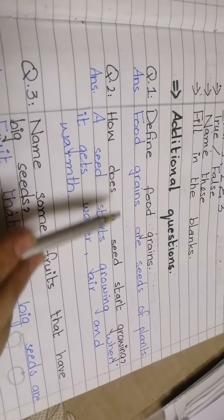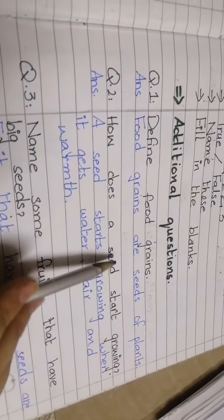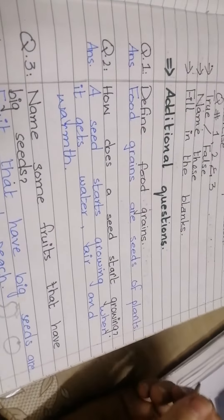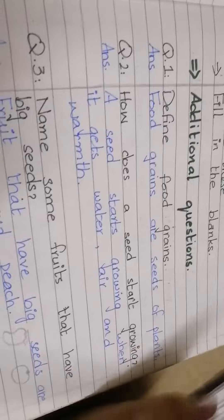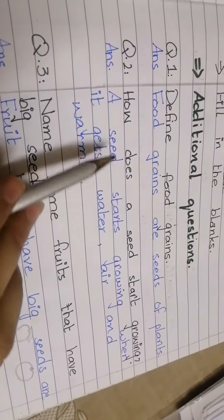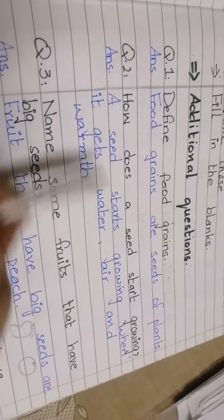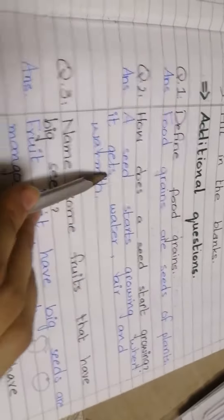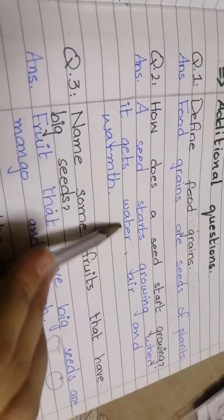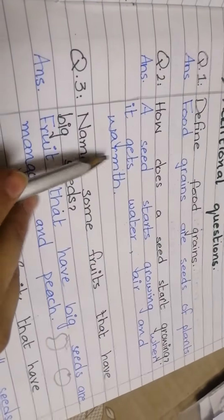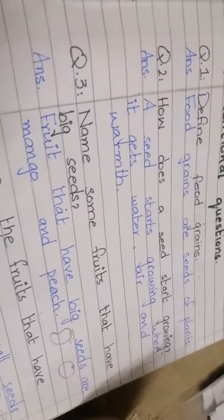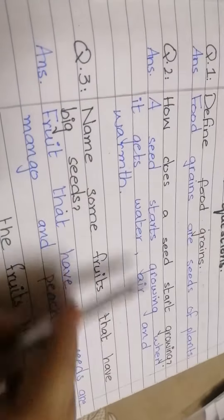Question number 2: How does a seed start growing? A seed starts growing when it gets water, air, and warmth. Because every seed is a baby plant, and it doesn't grow until it gets these three things.